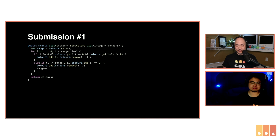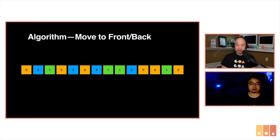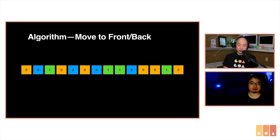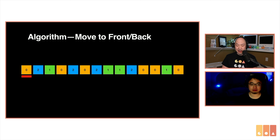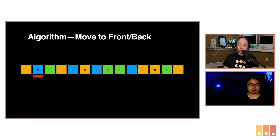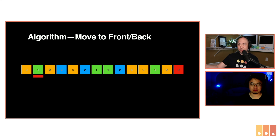So let's take a look at the first submission, submitted by Irene. We're calling this 'move to front and back.' What this algorithm does is it looks for zeros and moves all the zeros to the front of the list, and all the twos are moved to the right. So it looks at the first item — is it a zero? If it's already at the front, it moves to the next one. This is a two, so the two needs to go to the back.